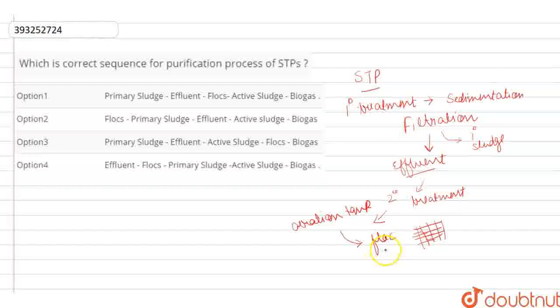After this, we check the BOD, which is called Biological Oxygen Demand. Then we reduce the BOD. The BOD becomes less. If the BOD is reduced, then we pass through a settling tank.